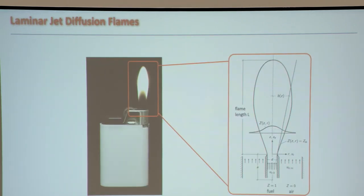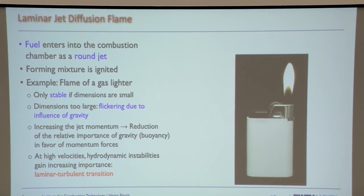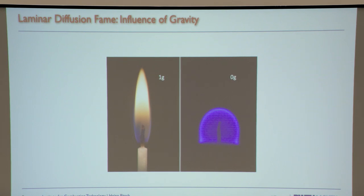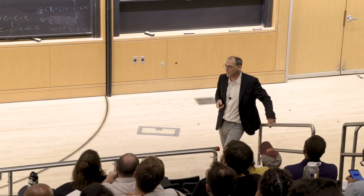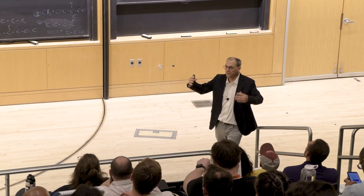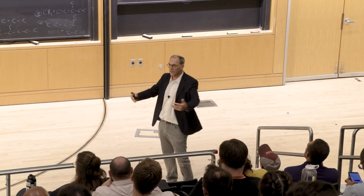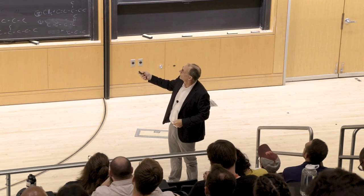We look at the flame length of laminar jet diffusion flames and then turbulent jet diffusion flames. A laminar jet diffusion flame is like a cigarette lighter. Here's a picture — that's a laminar diffusion flame, maybe a candle flame. The candle flame in zero gravity is totally different: microgravity flames extinguish at some point by themselves, because there's no buoyancy to draw in fresh air.